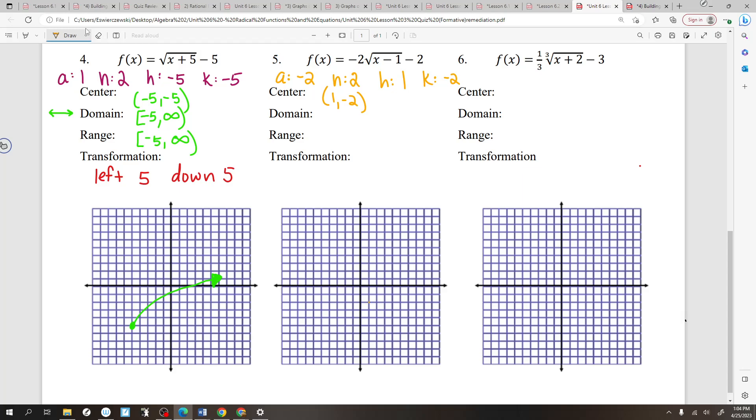Now, be careful. Because A is negative, it's going to go down from that center point. It's going to be, like, reflected. So it goes like this. So now, let's look at the domain. How far left does it go? One. Starts at one. How far right does it go?